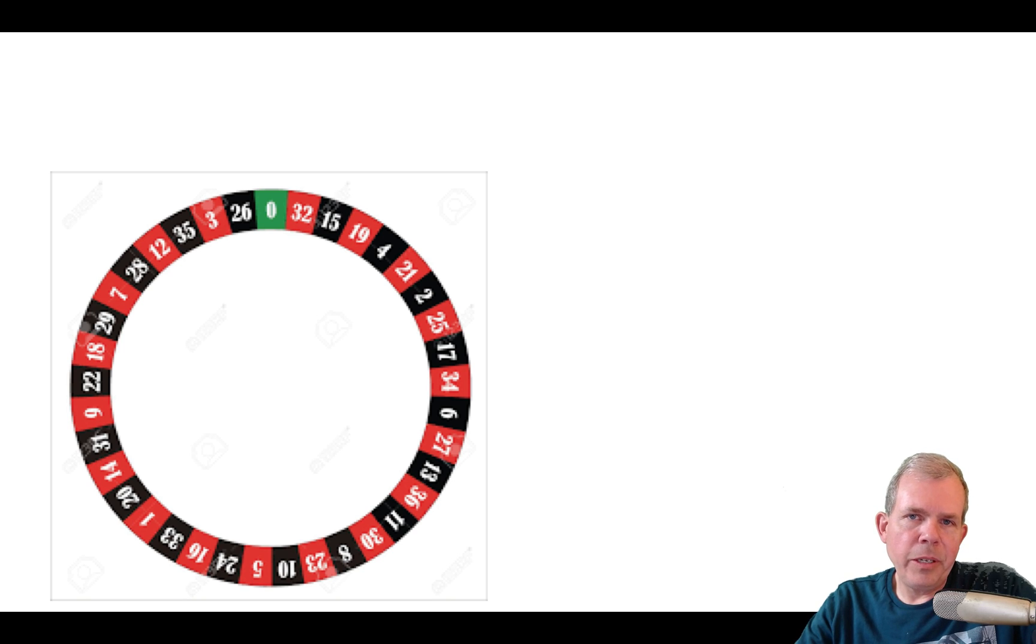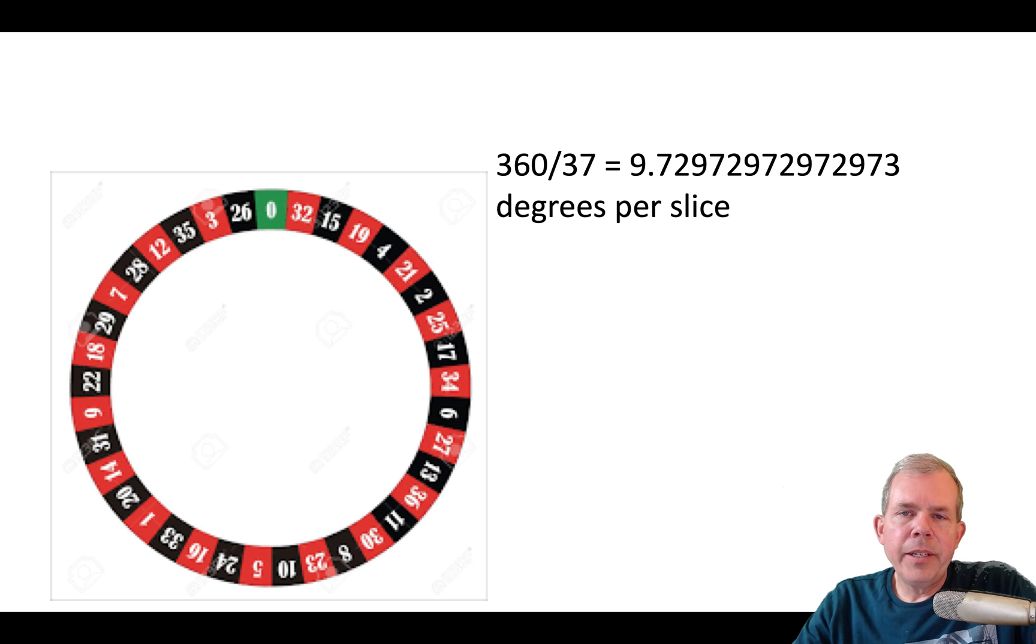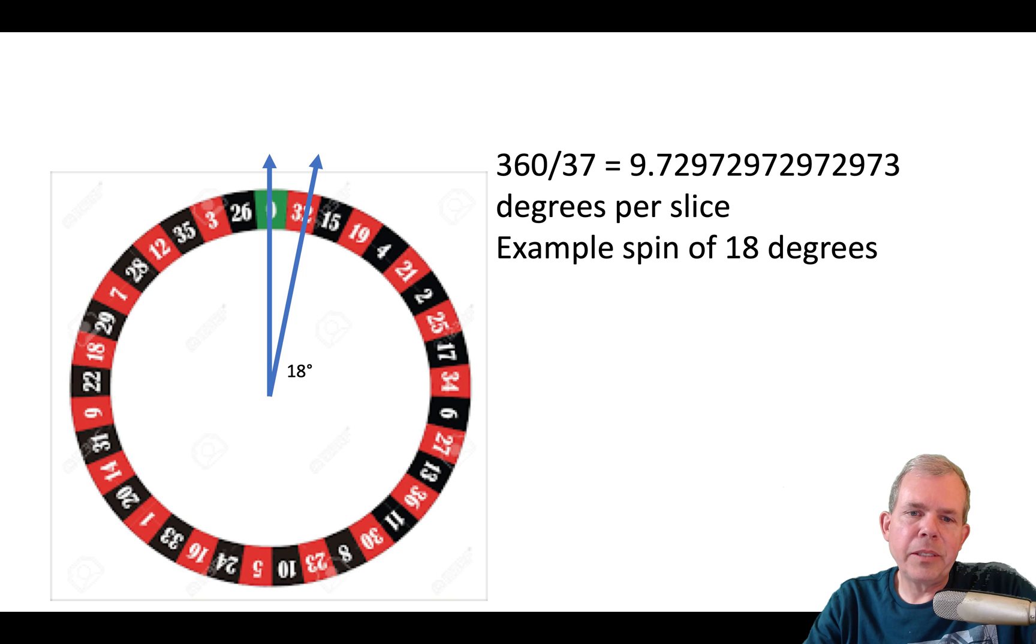So let's see how we could use some math to calculate what the winnings are. First of all, think about the slice of a pie. Now this pie is sliced up into 37 pieces. We have 36 numbers plus the number zero. And so when we divide 360 by that number of slices, we know that each angle of each pie is about 9.7 degrees. So that's the first math that you have to consider.